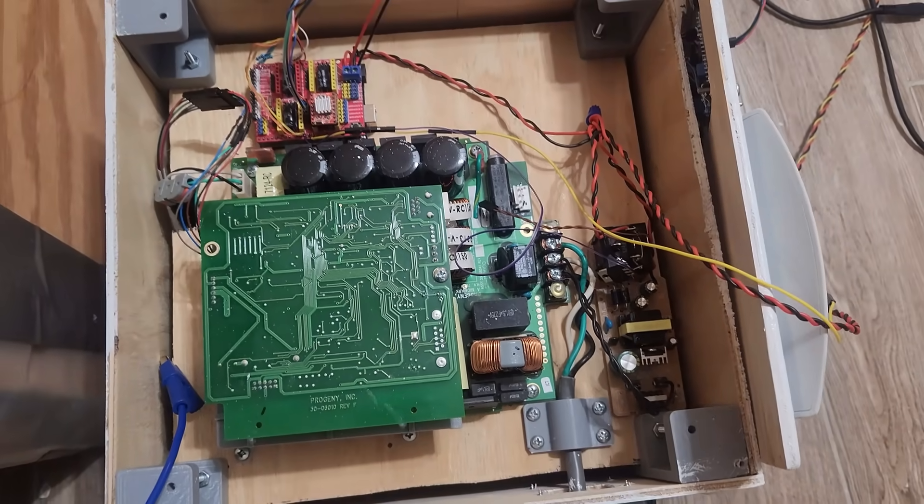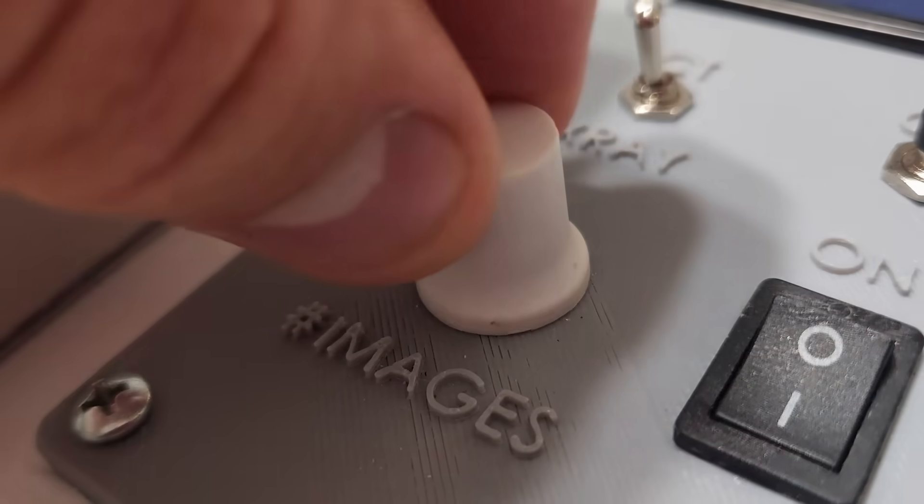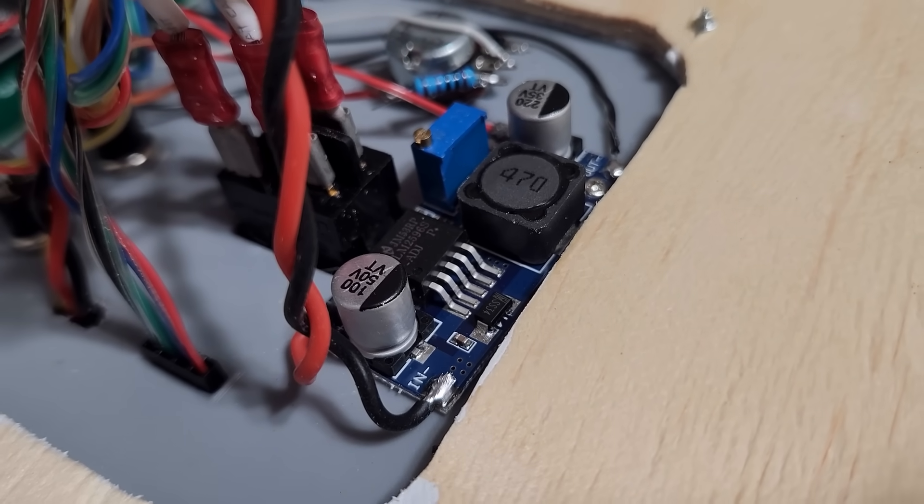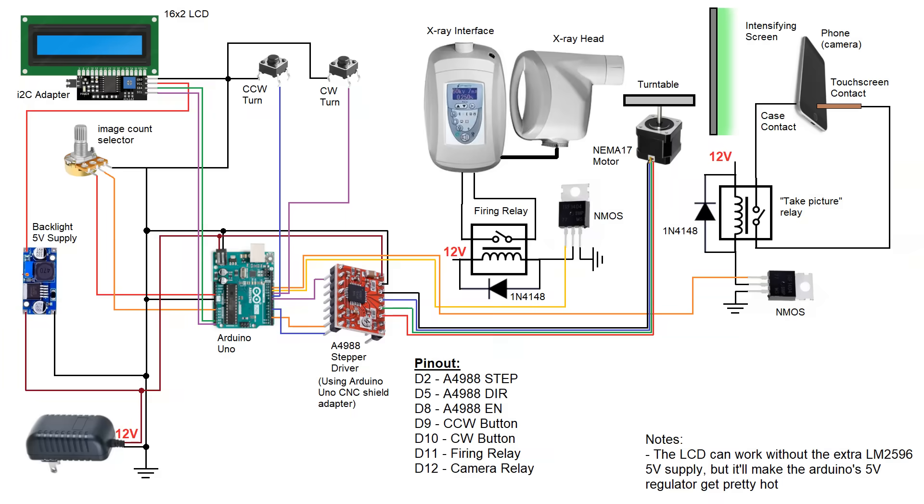Next, I add the control circuit. This is an Arduino that'll control a relay to turn the x-ray on and get the images, and control the turntable stepper motor based on the number of images taken which will be selected by a potentiometer. The setup also has a buck converter to convert 12V to 5V to run the LCD backlight because doing it with the Arduino's linear regulator can make it pretty hot. Here's a diagram of the whole setup.